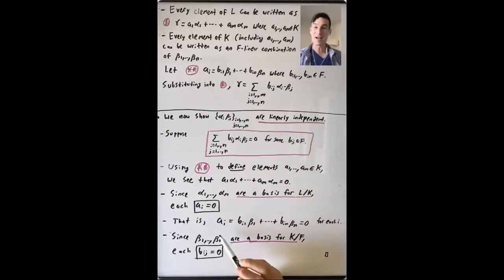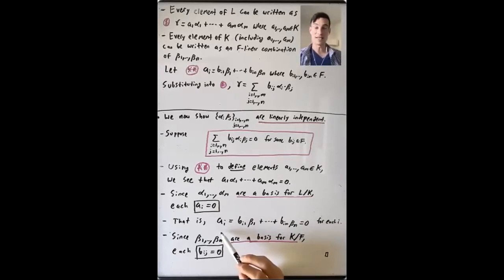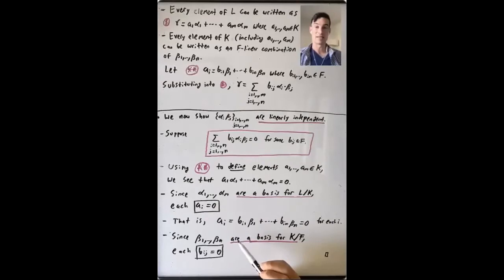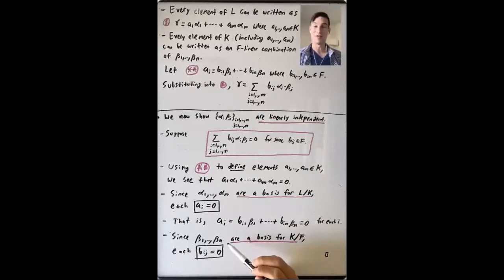So we have this set of n times m elements that is both a spanning set for L as a vector space over F and a linearly independent set, so it's a basis for L over F. Therefore the degree of L over F is the product of the degree of L over K and the degree of K over F. That completes the proof in the case that L over K and K over F are both finite extensions. Now we'll discuss the case where at least one of these extensions is infinite.